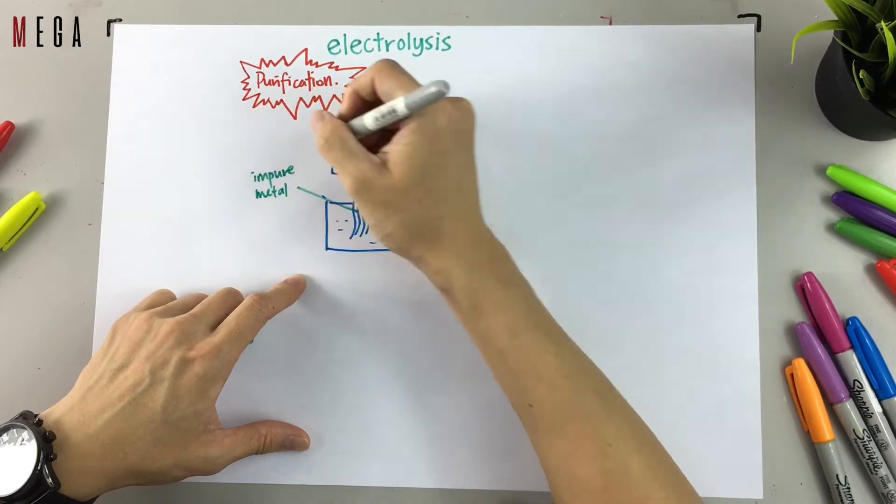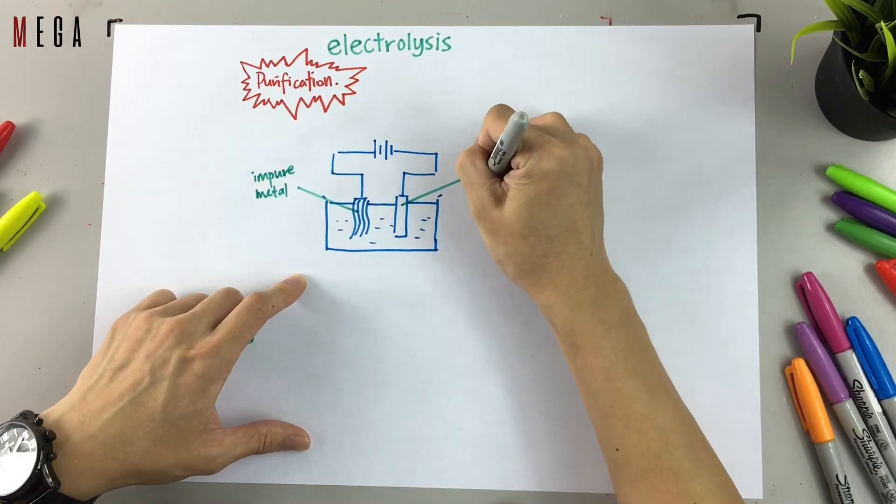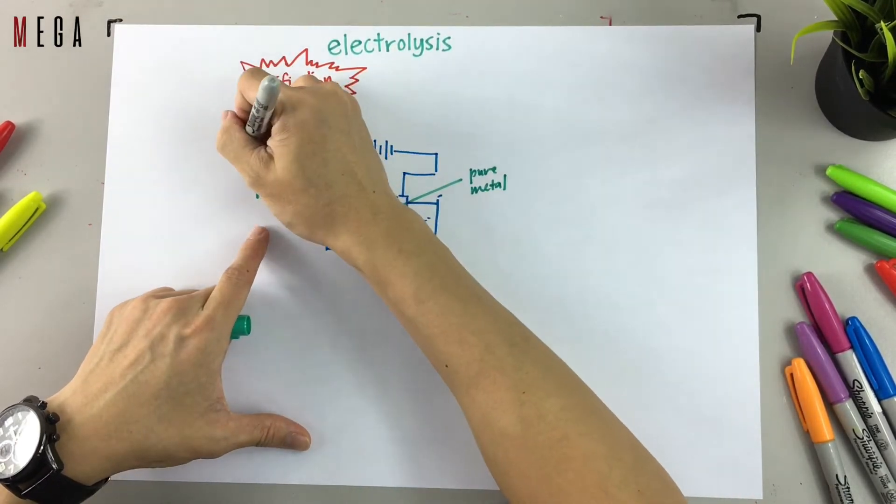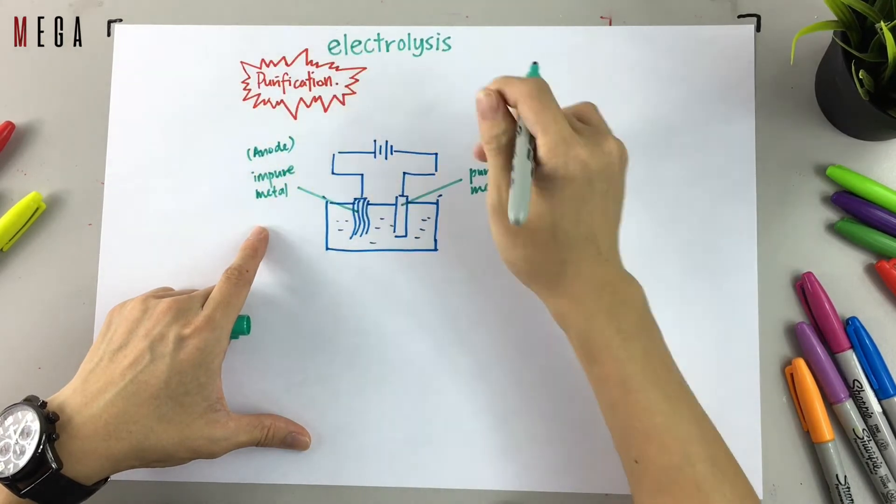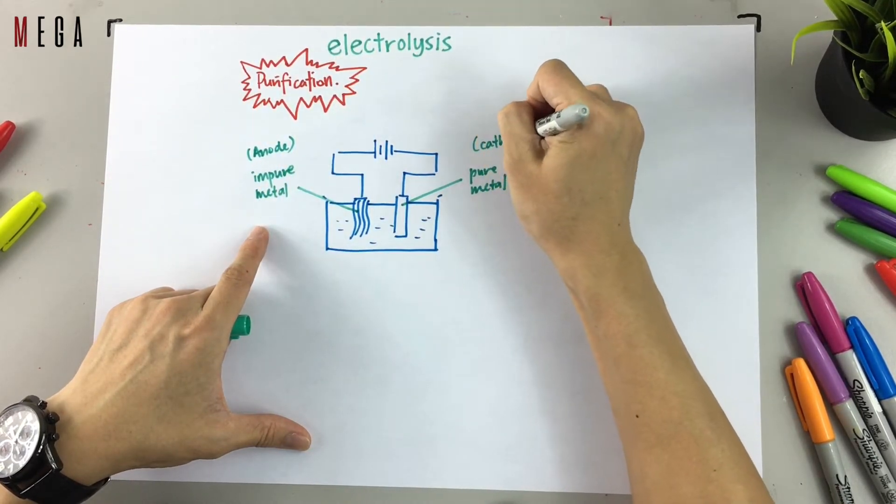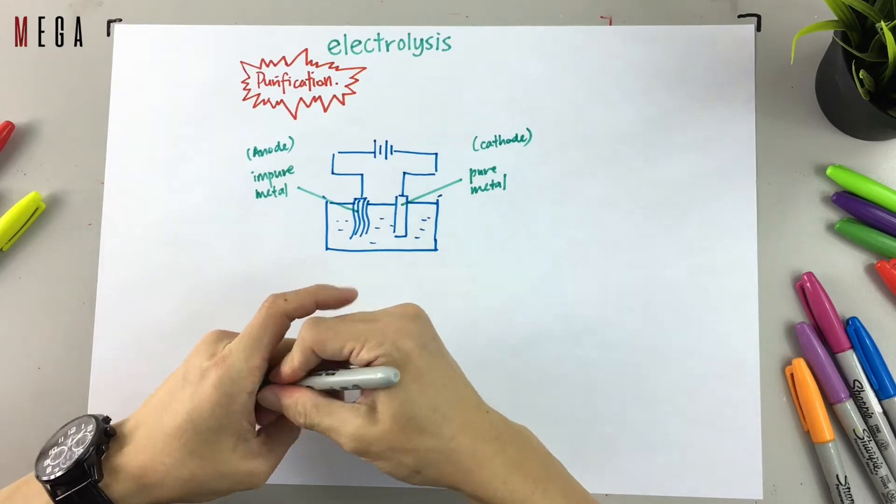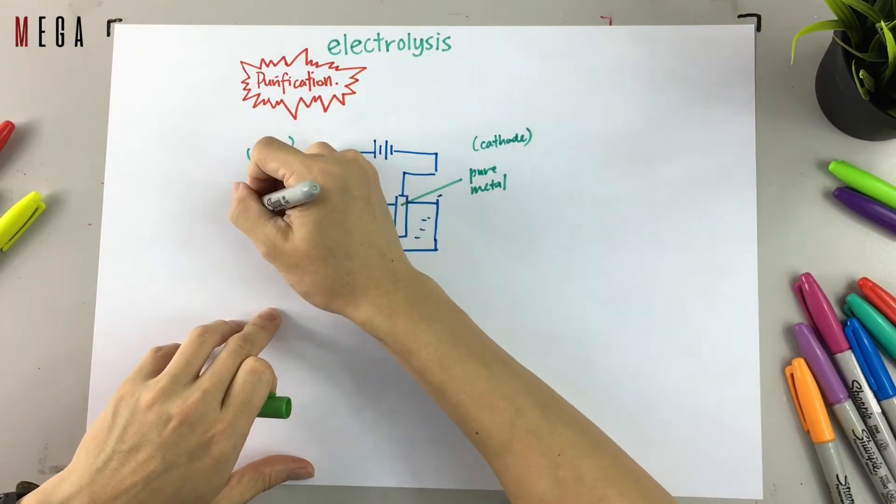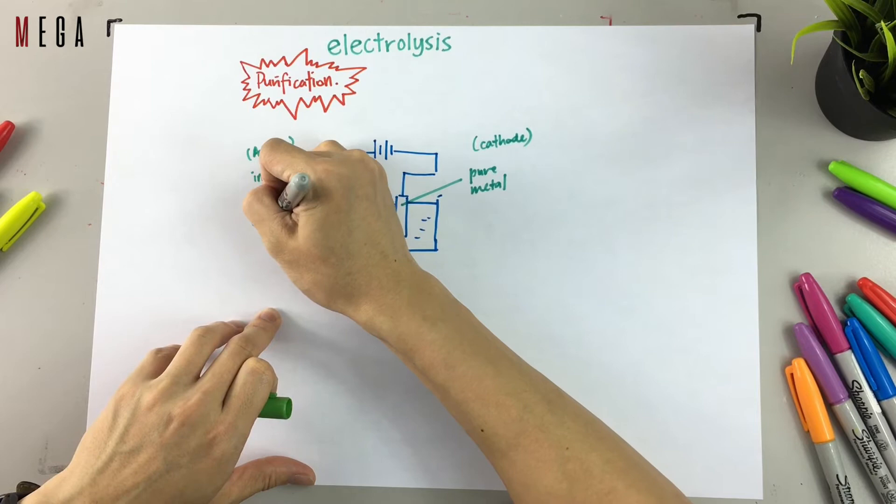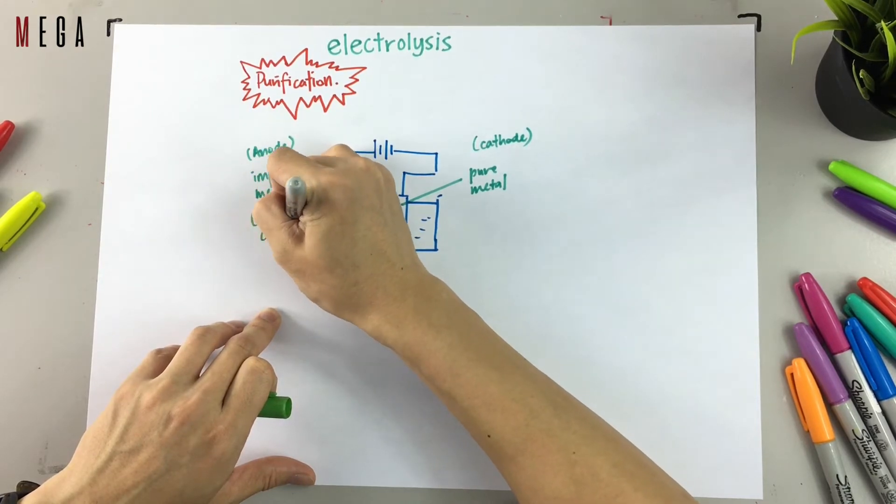So basically this is how the experimental setup looks like. There's always impure metal at anode, pure metal at cathode. So for example, anode is impure copper and cathode is pure copper.